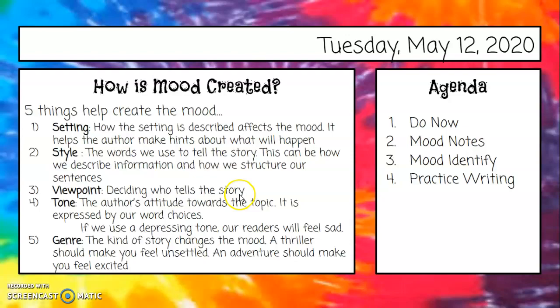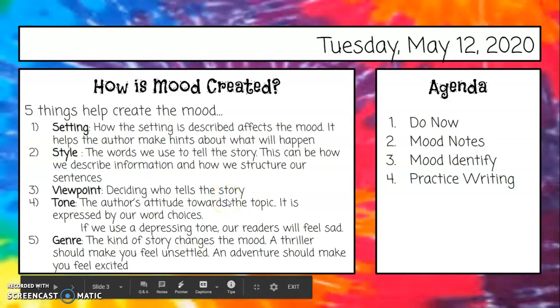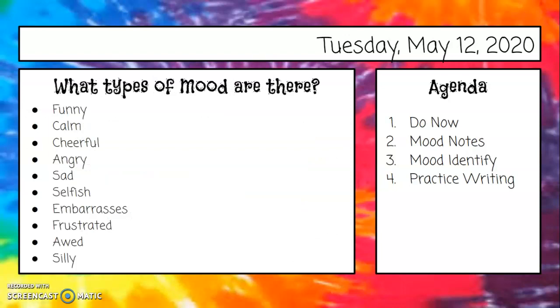The third thing is the viewpoint - deciding who tells us the story. Sometimes there's a narrator telling us someone else's story, but in The Crossover it's Josh, Filthy McNasty, who is telling us the story. So we're seeing his mood directly; his thoughts and feelings are coming right through. Four: tone - the author's attitude towards the topic. Is it expressed by our word choices? If we use a depressing tone, our readers will feel sad. Five: the genre - the kind of story changes the mood. A thriller should make you feel unsettled; an adventure should make you feel excited. So the kind of book it is will impact the mood of the story.